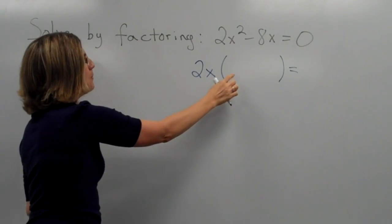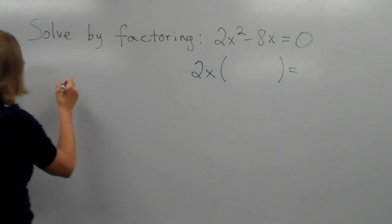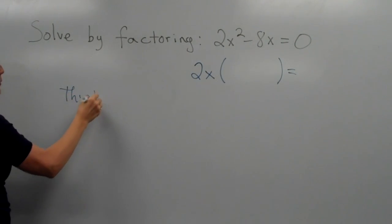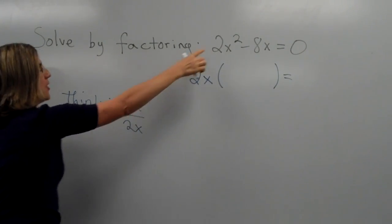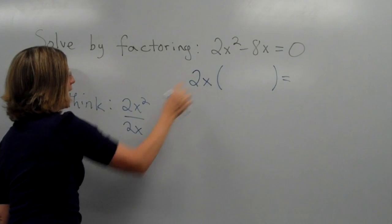Now, how do we come up with the parts that go here and here? We don't have to write them, but we think 2x squared over 2x. This over that.